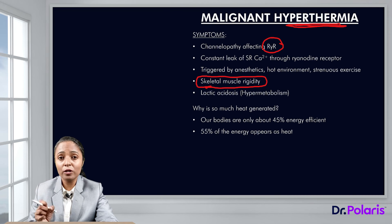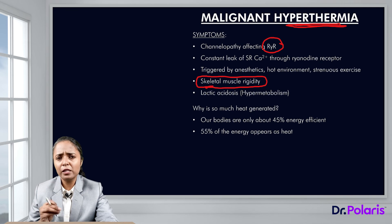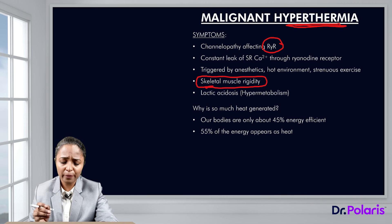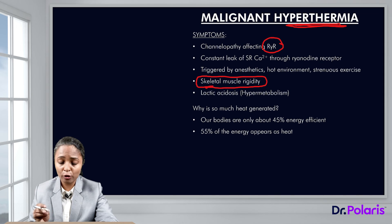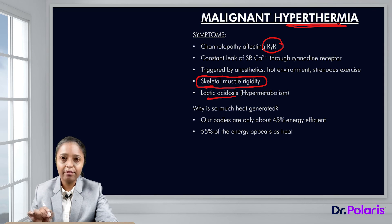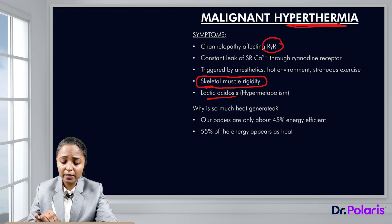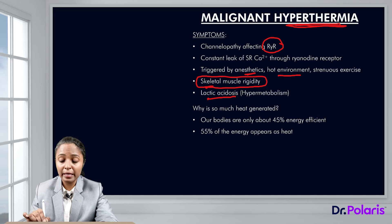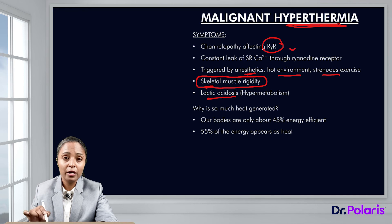Because a lot of ATP is being used up in cross-bridge cycling, metabolites accumulate and lactic acidosis occurs. Malignant hyperthermia is triggered by certain anesthetics, an extremely hot environment, and strenuous exercise when there is a mutation of the ryanodine receptor.